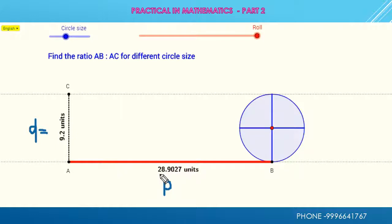Now when you divide 28.9027 by 9.2, you get the value 3.14. It means the value of pi is obtained by dividing P by D. Therefore, pi is equal to P by D.